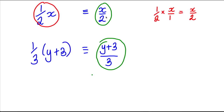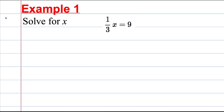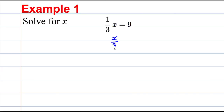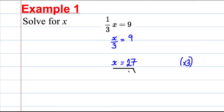Example 1: solve for X — one third X equals 9. A third times X is equivalent to X divided by 3, so X over 3 equals 9. Multiplying both sides by 3 gives X equals 27. Checking: one third of 27 is indeed 9, so that's correct.